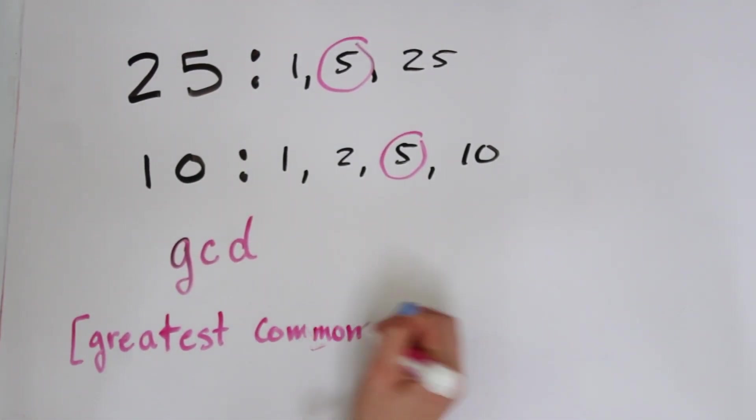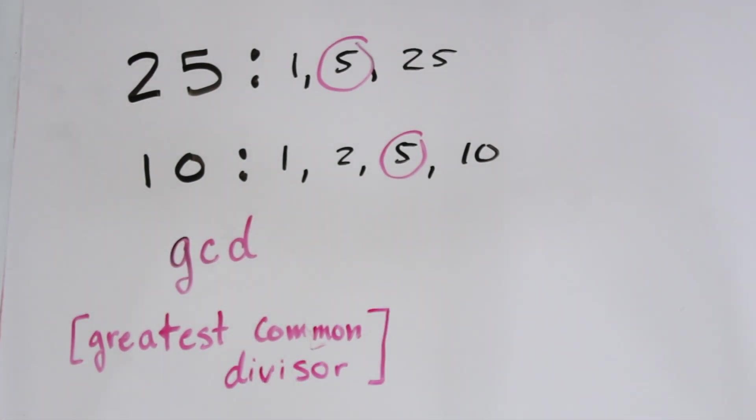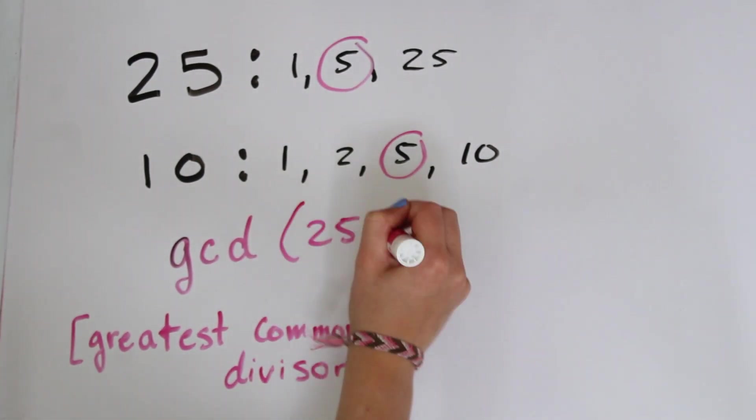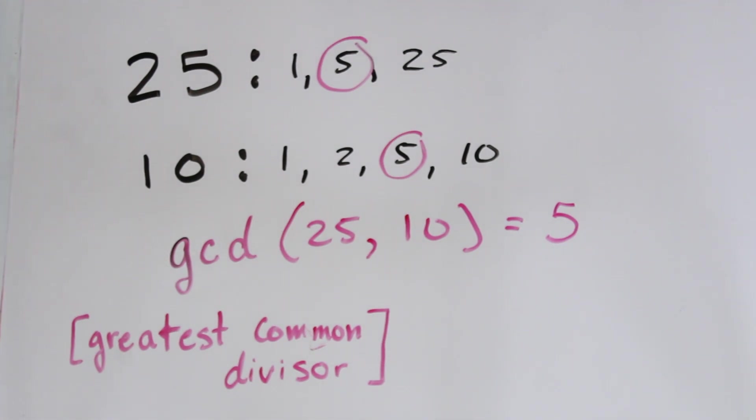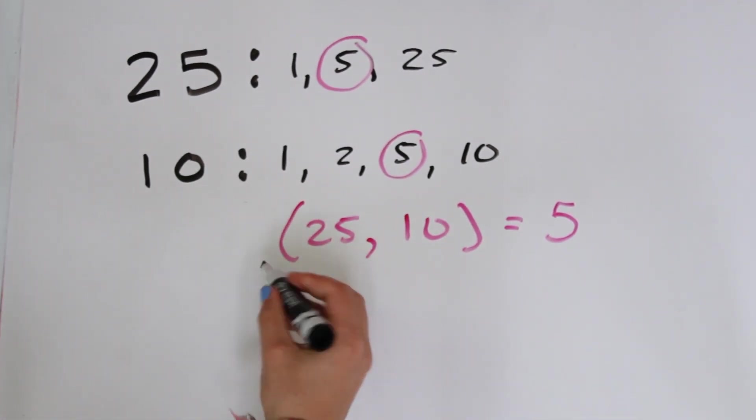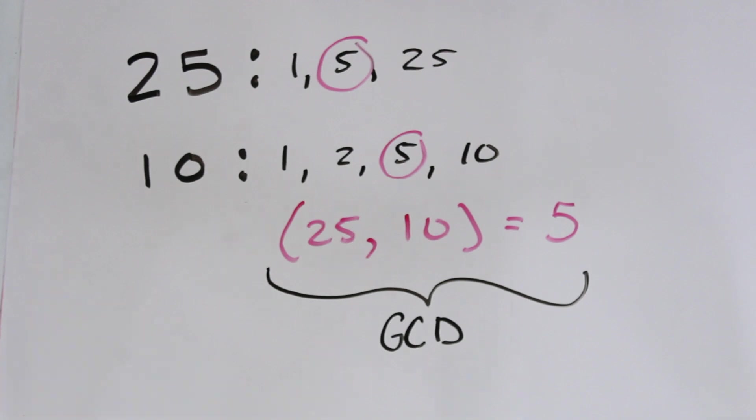A note on notation is that I'm going to be writing GCD in parentheses 25, 10 equals 5, or oftentimes without the GCD in front. So just know that that means greatest common divisor.